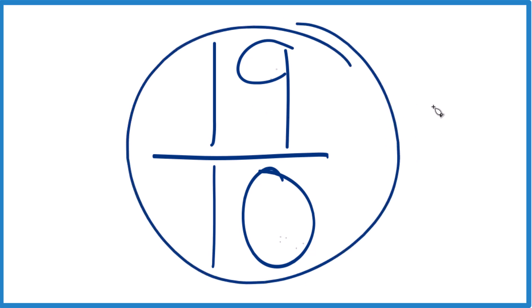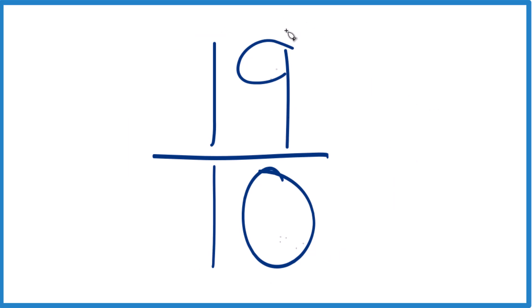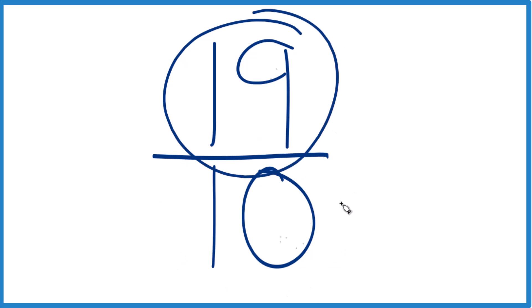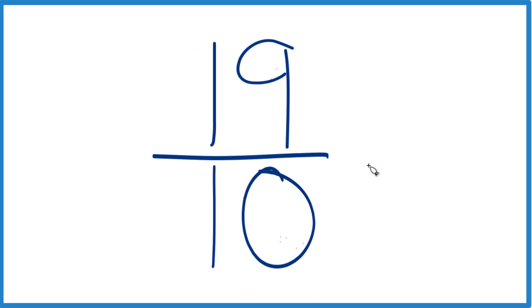We can't reduce this any further. But the numerator 19 is larger than the denominator 10, which means it's an improper fraction, and we can write it as a mixed number as well.